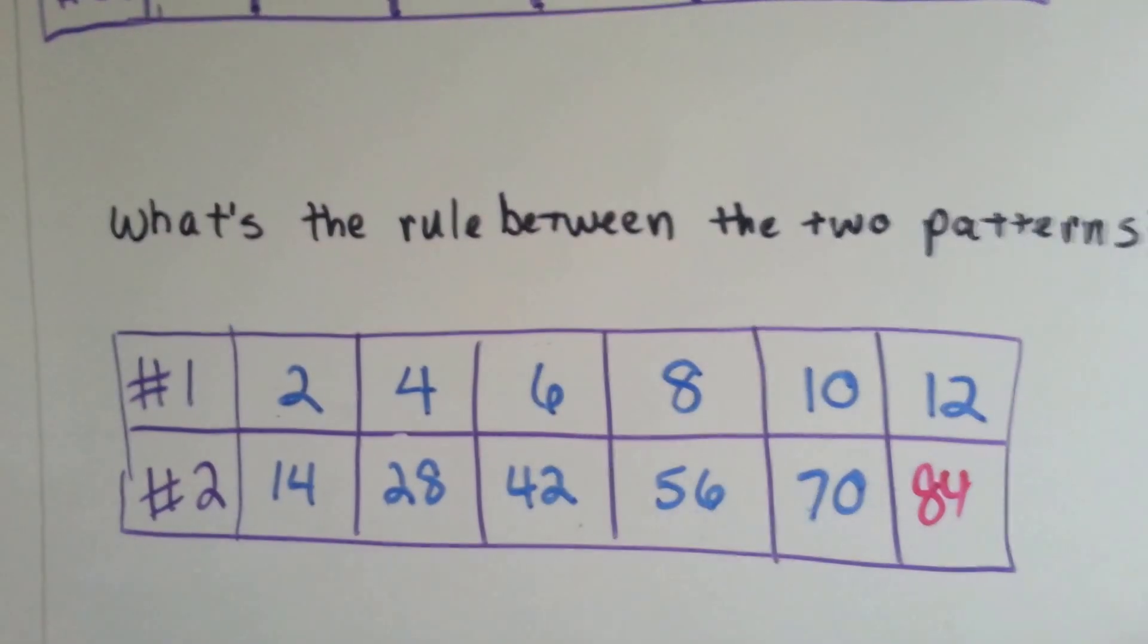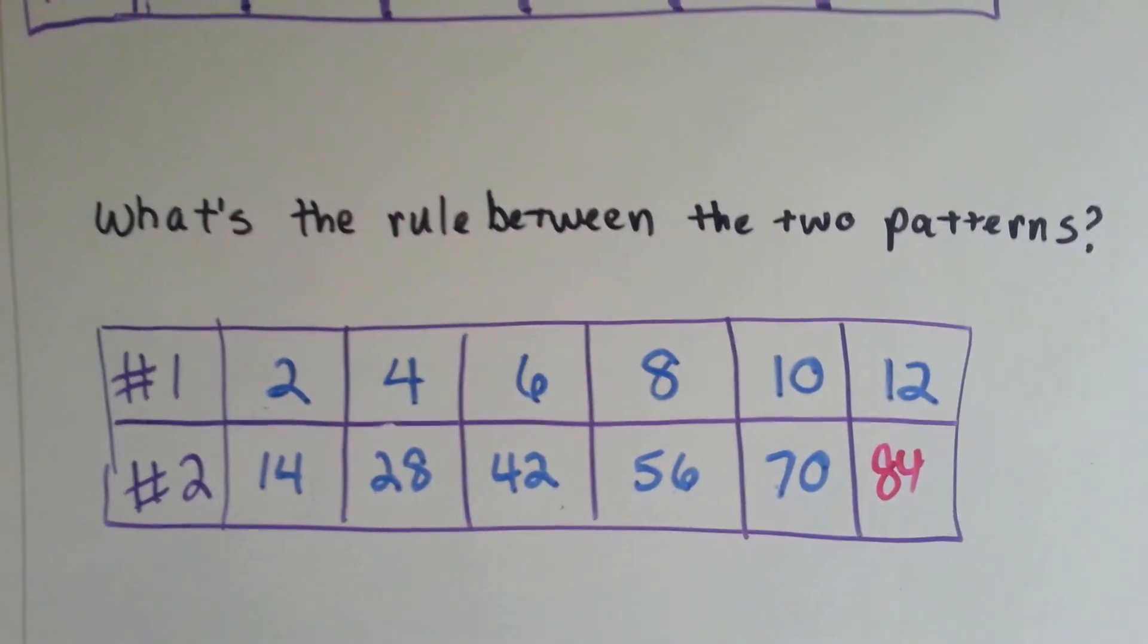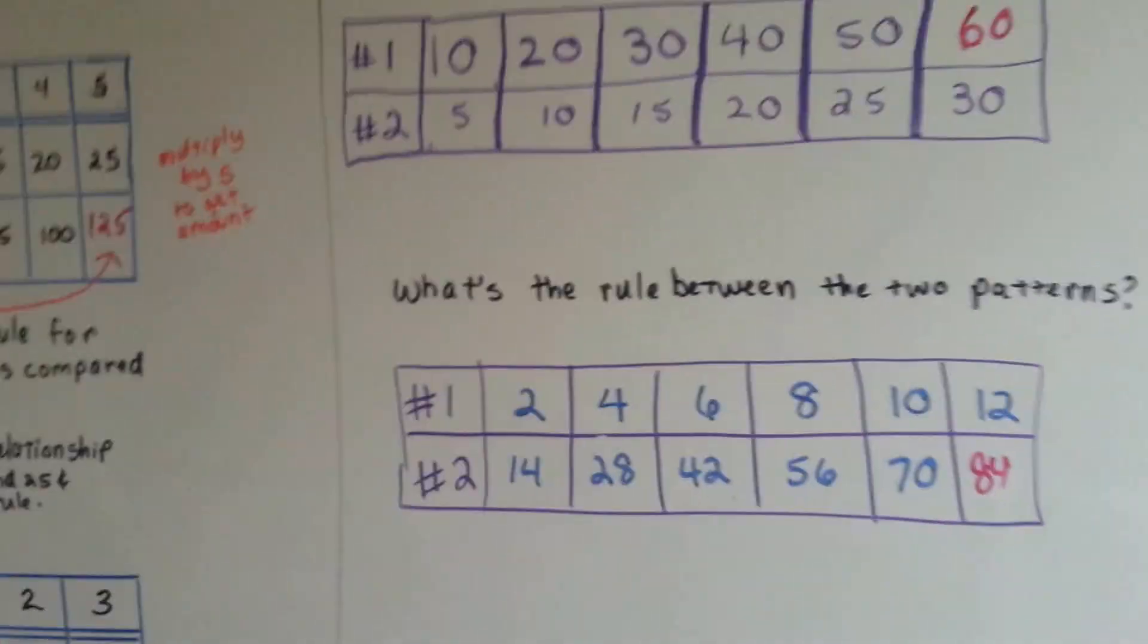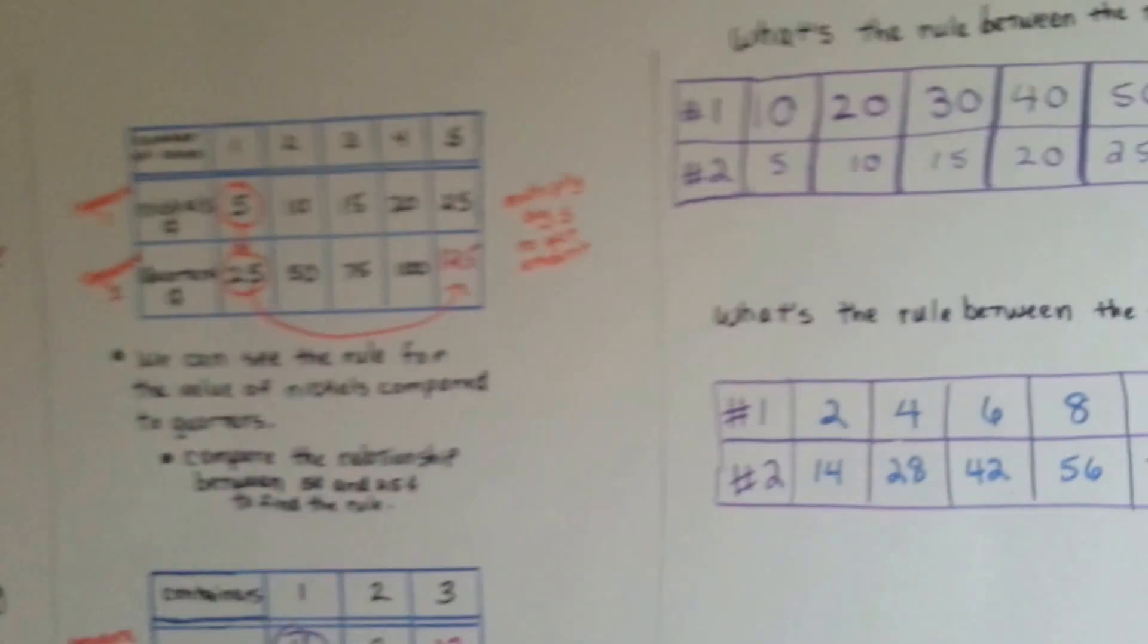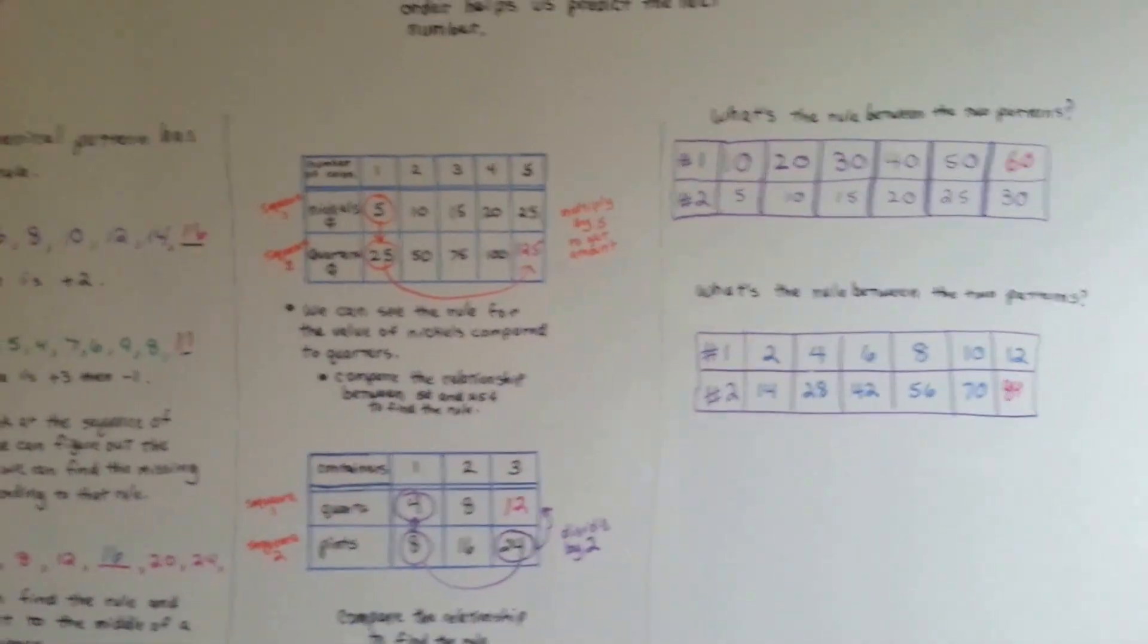Sequence number 2 was 7 times more than the numbers that were in sequence number 1. So we can find the relationship between the two patterns and then we can fill in the empty space.